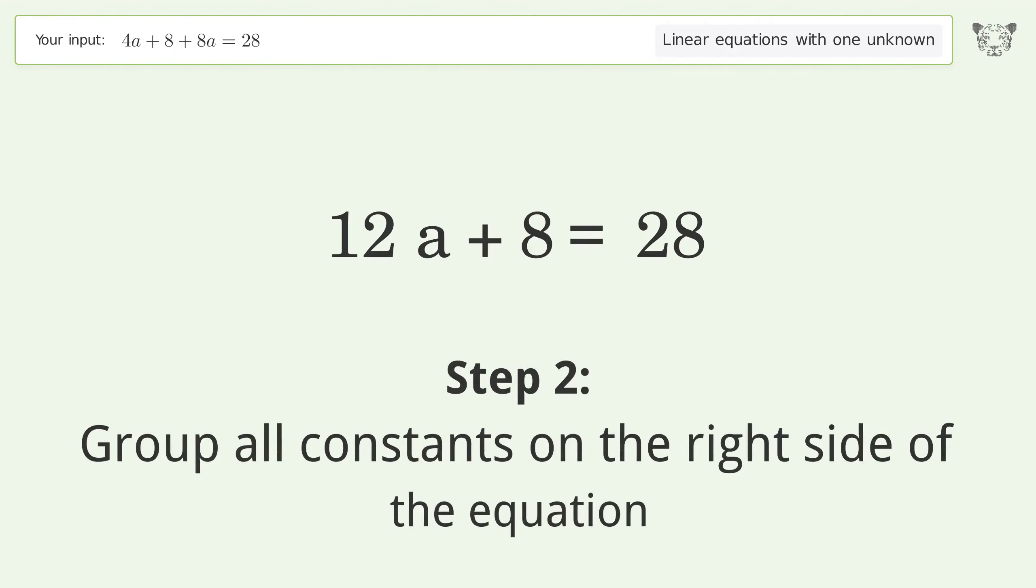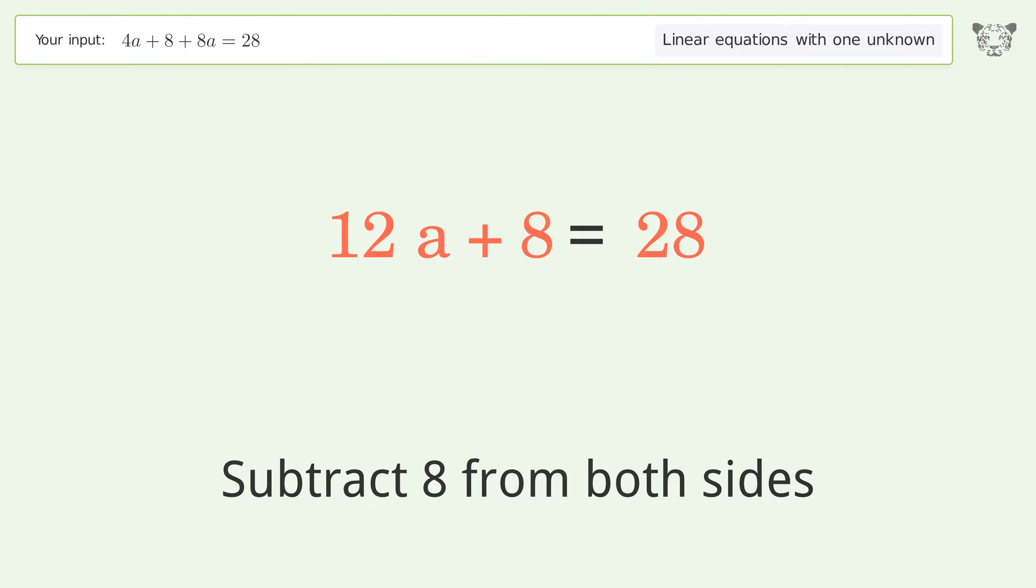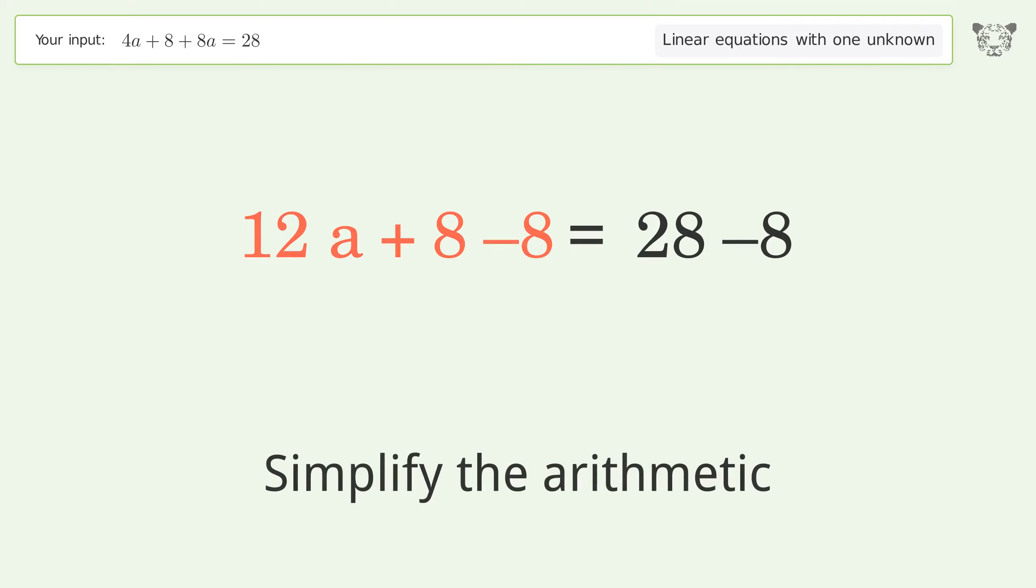Group all constants on the right side of the equation. Subtract 8 from both sides. Simplify the arithmetic.